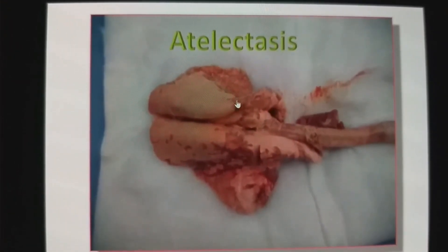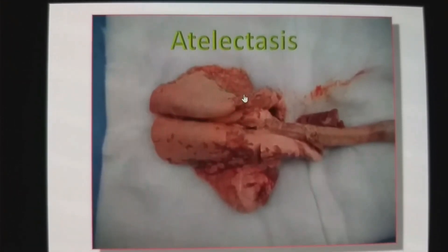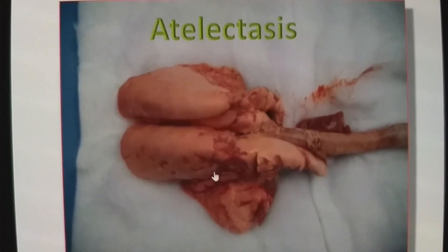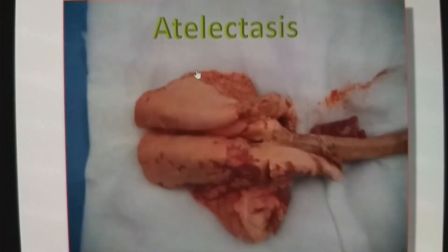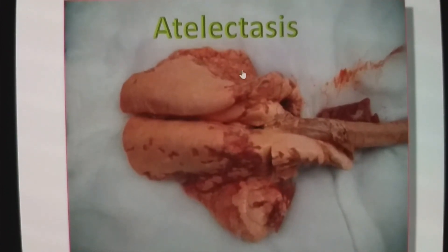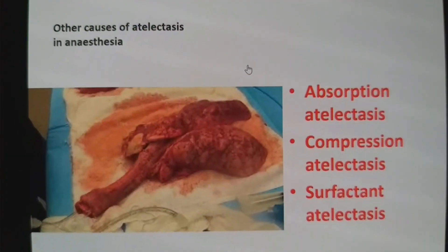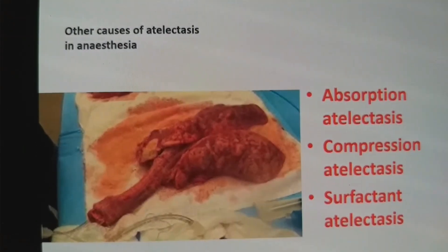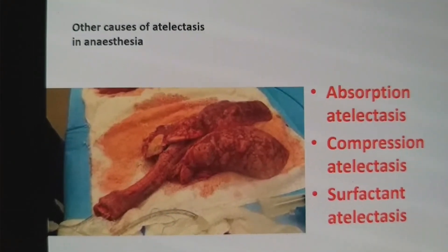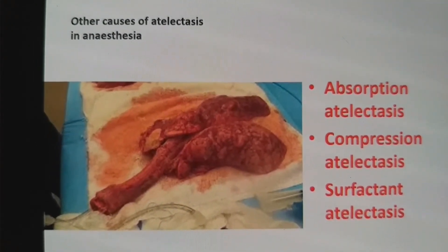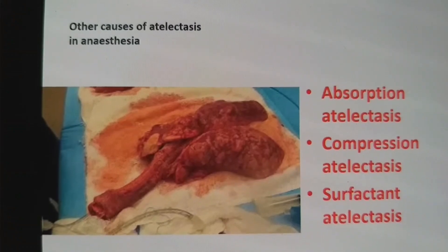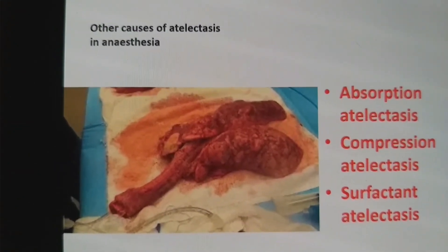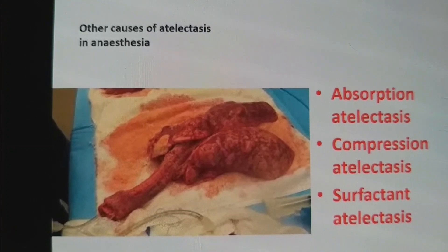A video was taken in a goat lung cadaver. The dark red color represents the atelectatic area. There are three main reasons for atelectasis in the perioperative period: first, absorption atelectasis; second, compression atelectasis; and third, surfactant atelectasis. We will discuss each one.